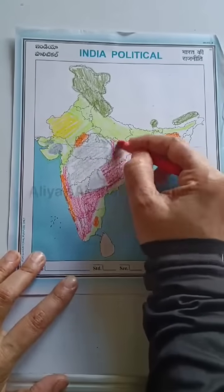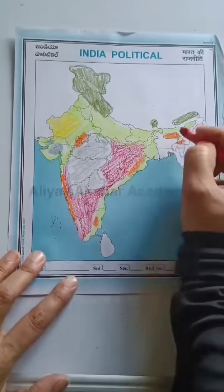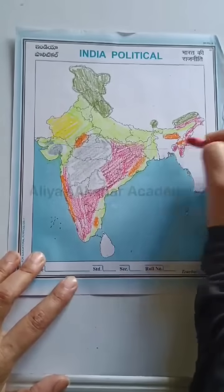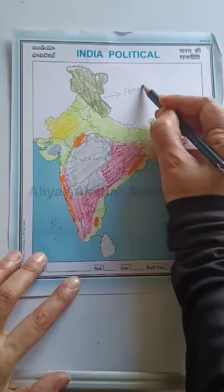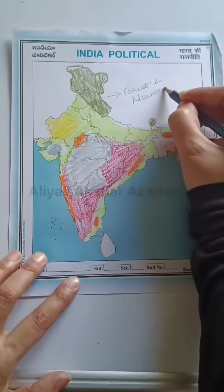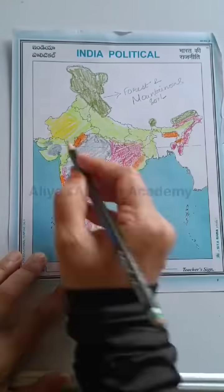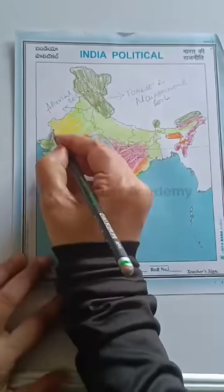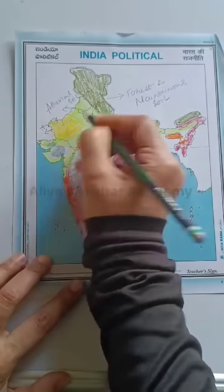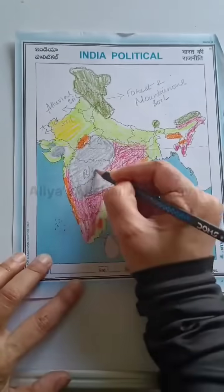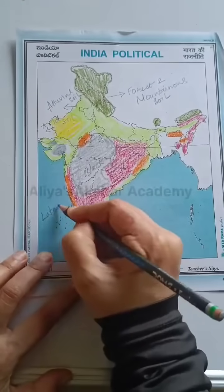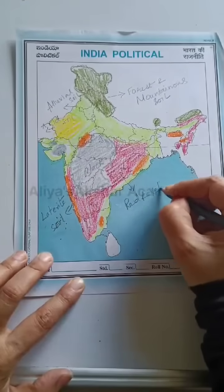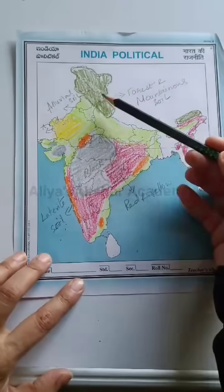Using different colors will help you remember the location of different soil types. However, this map pointing is just for identification purpose only. The examiner will mark any area and you need to identify which soil type it is.